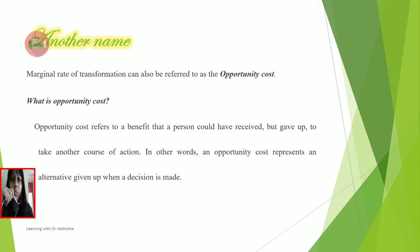There is another name by which we know this marginal rate of transformation, which is opportunity cost. Opportunity cost refers to a benefit that a person could have received but gave up to take another course of action. It can also be defined as an alternative given up when a decision is made. When you have chosen an option, what you are going to sacrifice is your opportunity cost. If we evaluate that sacrifice in terms of cost or price, then that economically is known as the opportunity cost.